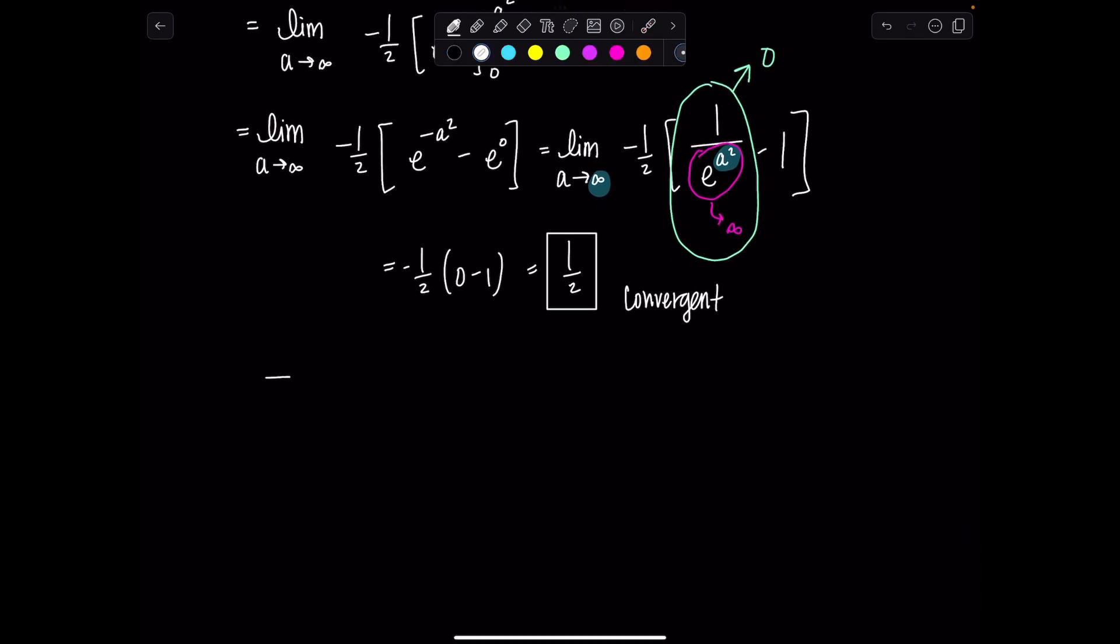So, now we can just summarize. The integral from negative infinity to infinity of x times e to the negative x squared dx. Well, we know that this integral approaches negative one-half plus one-half, which is zero, which is a finite number. Therefore, the improper integral is convergent.